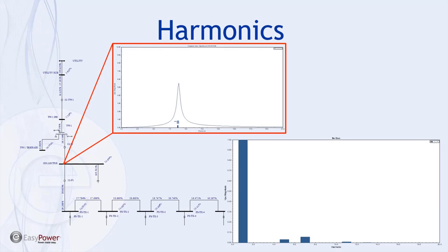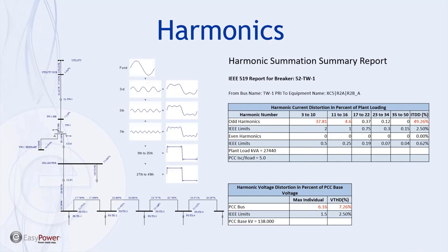We can also look at a bar graph of the voltage distortion the program is calculating for that bus, and we can see voltage distortion particularly around the seventh harmonic, which has some effect due to the eighth harmonic resonant point. For IEEE 519 compliance, the program generates nicely formatted reports. From this report, these simulated inverters are violating not only current injection but voltage harmonic distortion requirements at the point of common coupling.